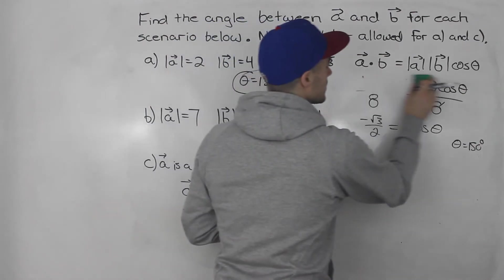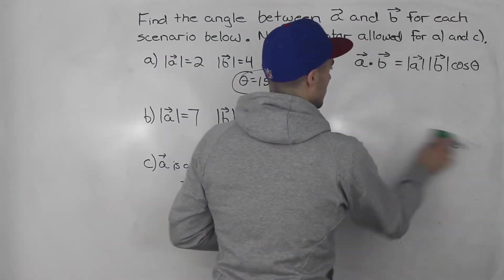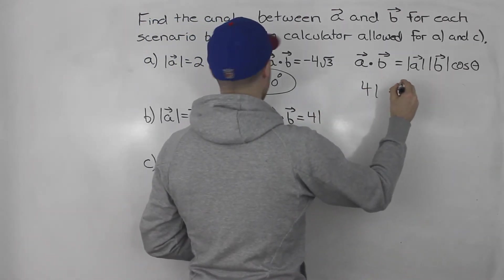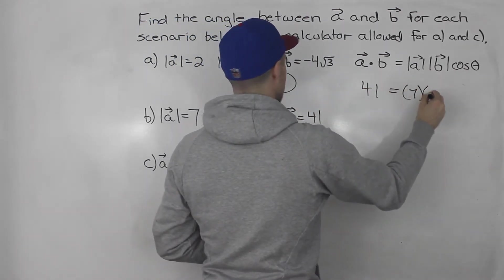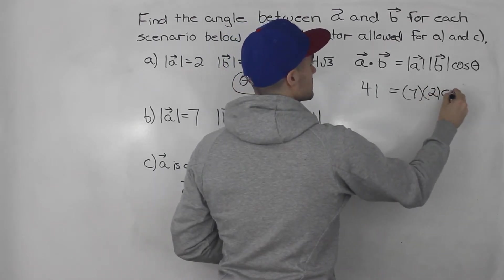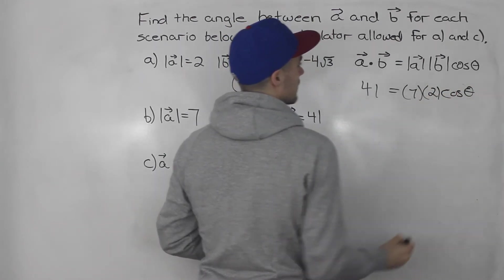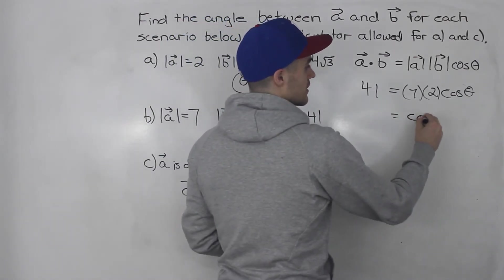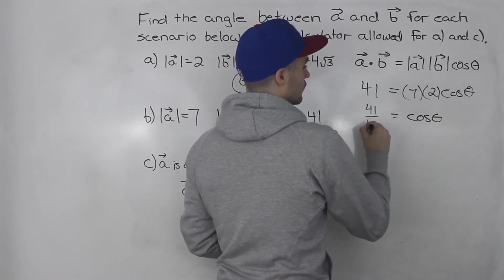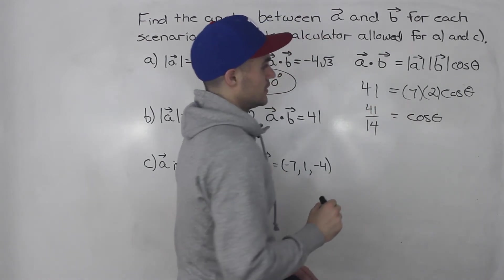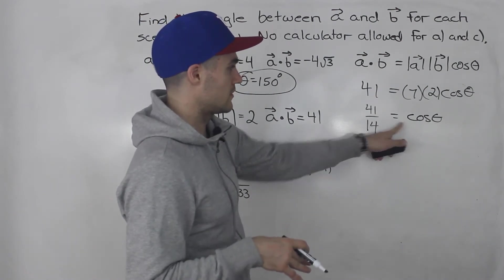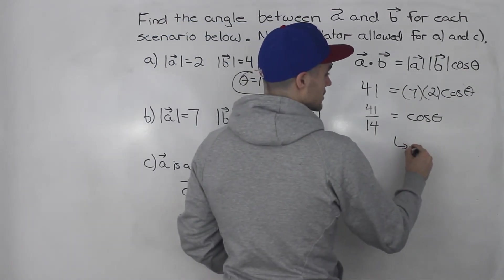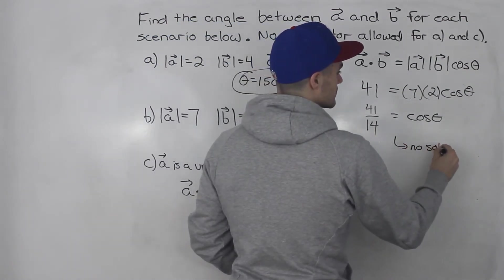Moving on to part b. Now part b, same thing, we got the dot product 41 equals the magnitude of a, which is 7, times the magnitude of b, which is 2, times cos theta. And then 7 times 2 is 14. Divide both sides by 14, so cos theta is going to be 41 over 14. But notice that cos theta can only be between negative one and one. 41 over 14 is greater than one, so for this there's actually no solution.